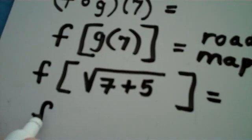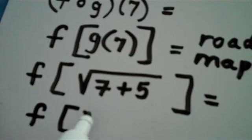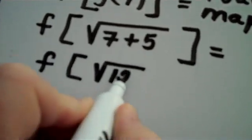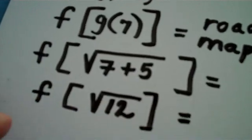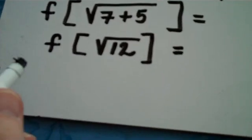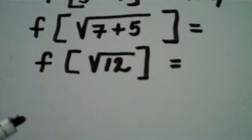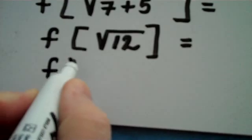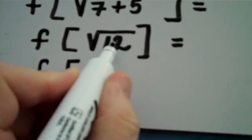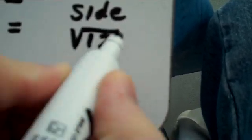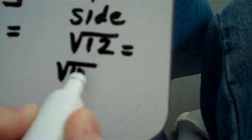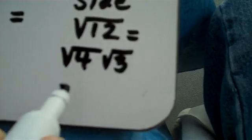So we end up getting f of the square root of 12. Now, before we go any further, I always teach my students to simplify square roots at every step in the process. So you know that the square root of 12 can be broken apart. Let's go here off to the side. The square root of 12 actually can be written as the square root of 4 times the square root of 3, which is 2 radical 3.